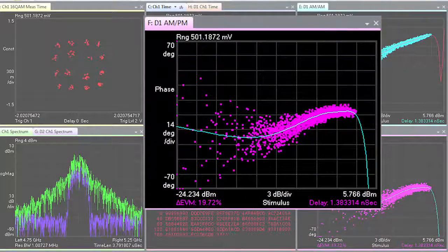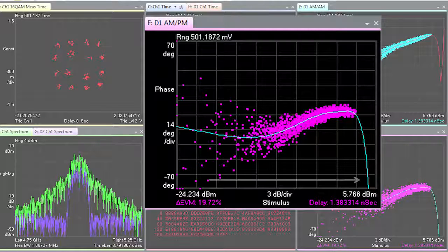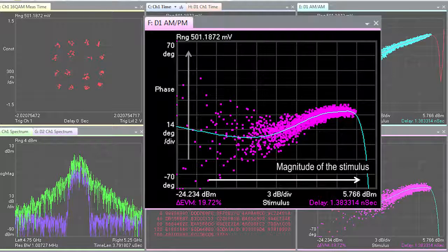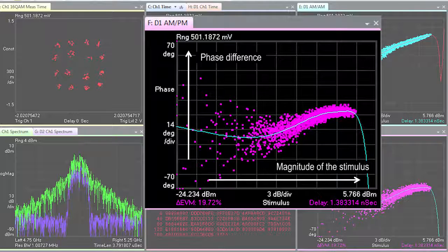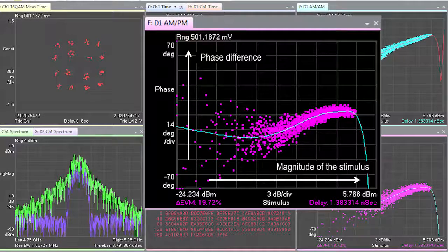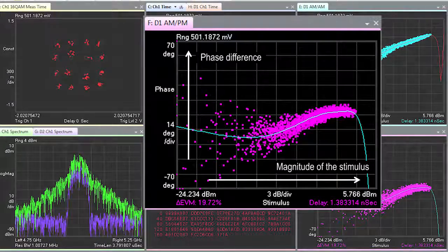AMPM shows phase difference versus the stimulus magnitude. The X value is the magnitude of the stimulus voltage, and the Y value represents the phase difference between the stimulus and the response, shown in degrees. A positive phase difference for a point indicates that the response phase is greater than the stimulus phase for the same corresponding time point.